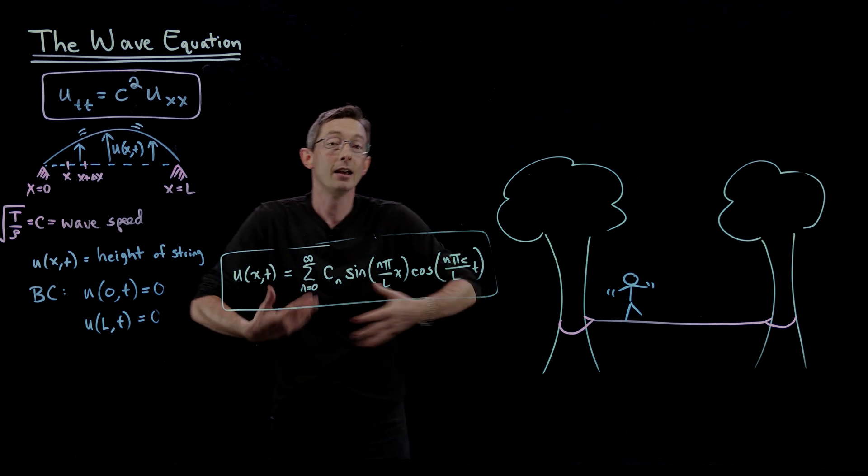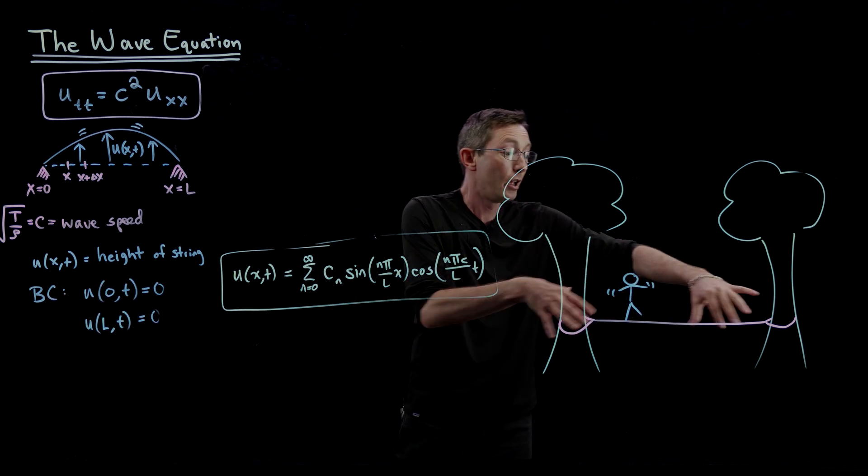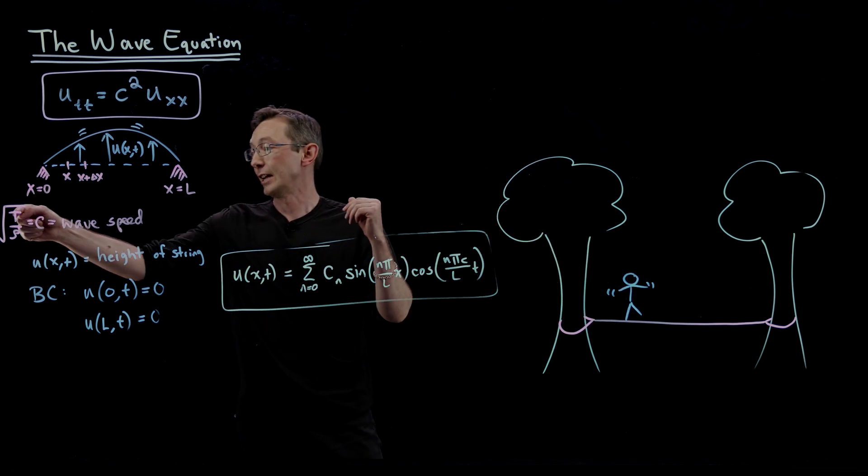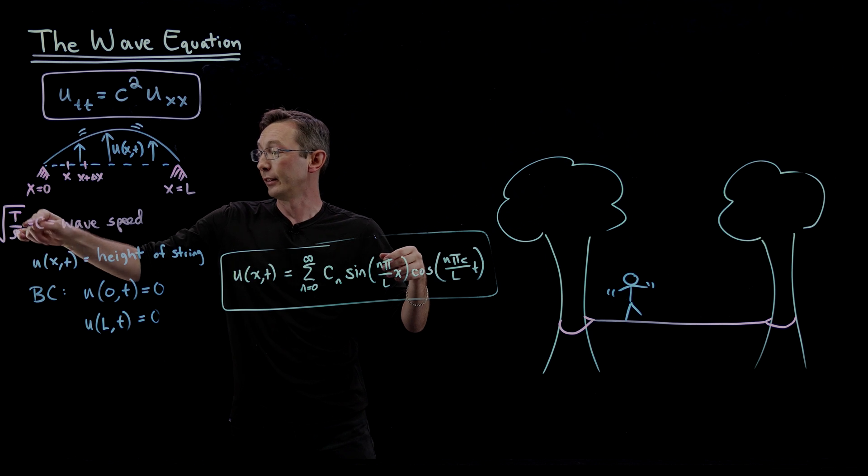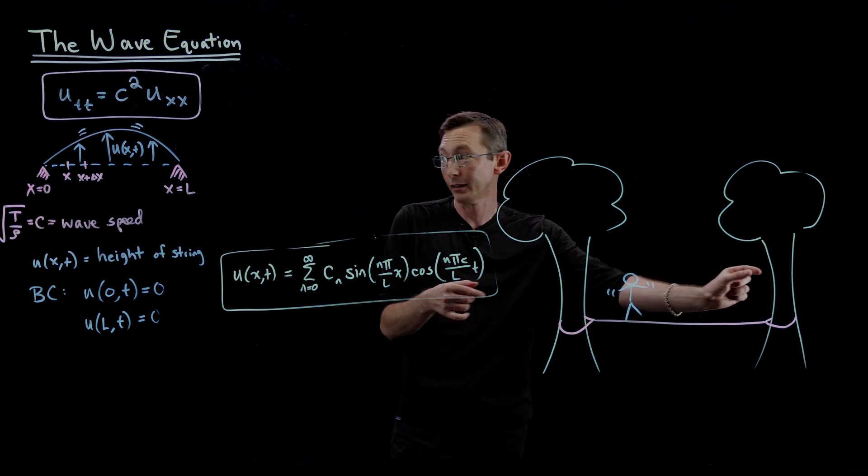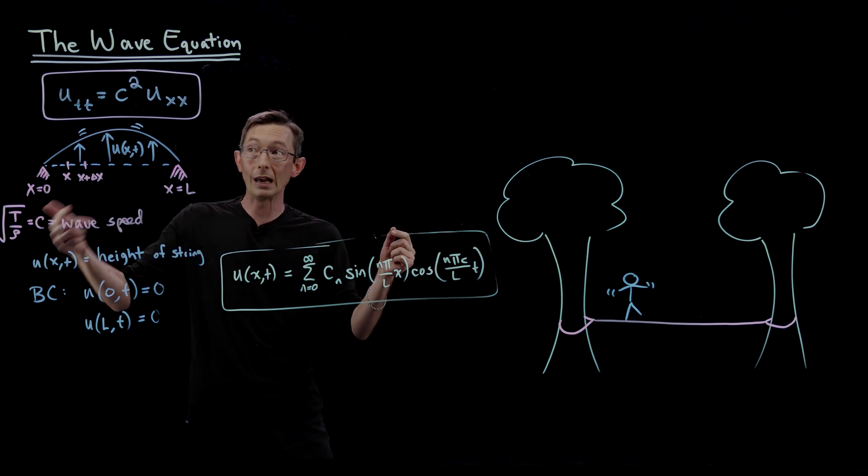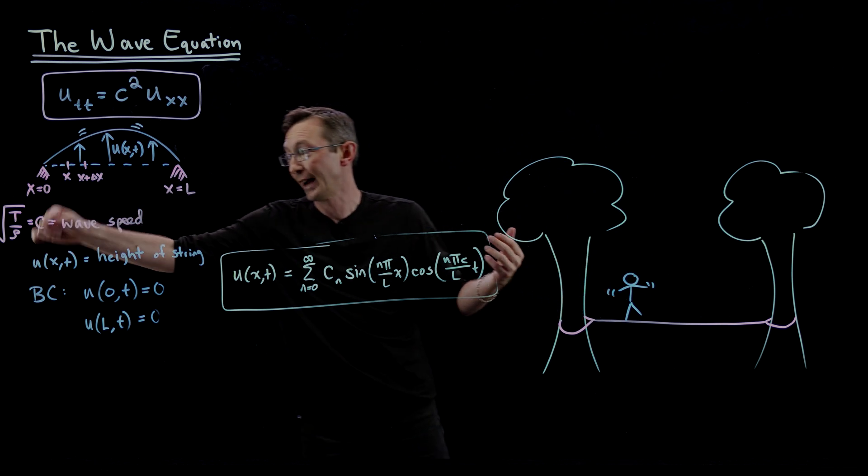It'll have a characteristic frequency that will depend on the tension T in the line, the linear density ρ—how much it weighs per unit length. That will determine the wave speed of the partial differential equation.